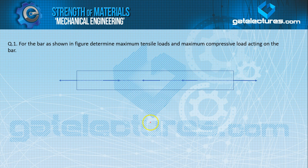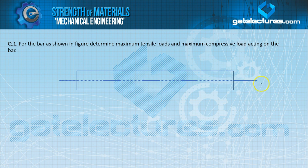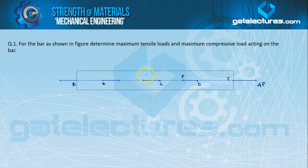The first numerical is this: for a bar as shown in the figure, determine maximum tensile load and maximum compressive load acting on the bar. This load is 4P, acting in this direction. This point is A, this point is B, this point is C, this point is D, and this point is E. At point D, the load is P. We balance: this is 5P, this is 3P, and this is P.